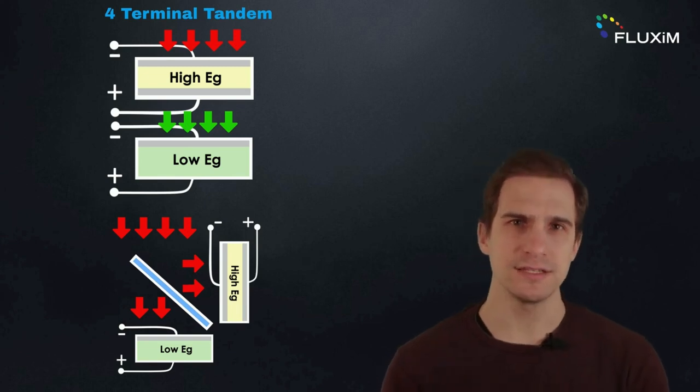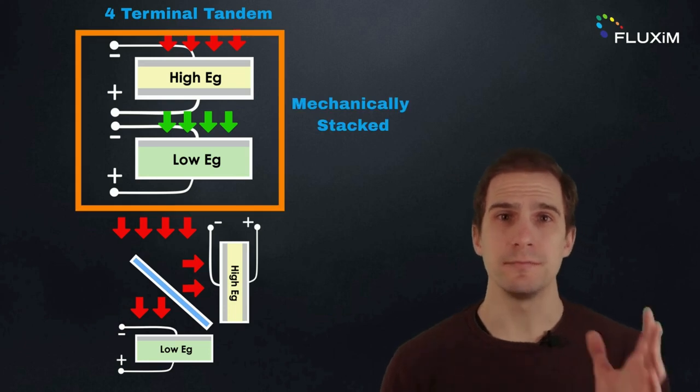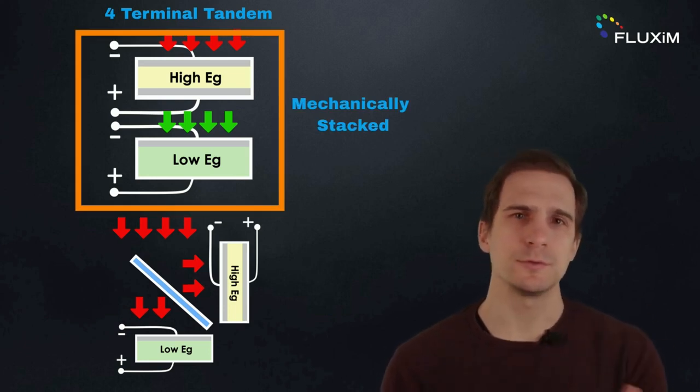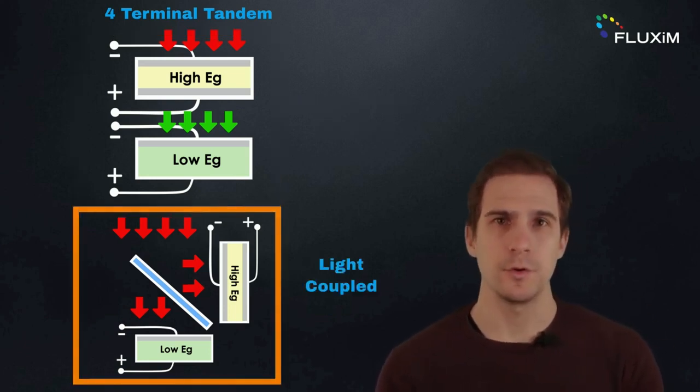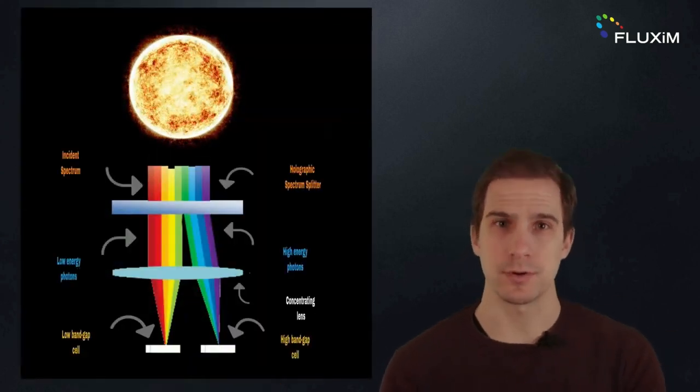The subcells are either mechanically stacked or coupled with a spectral splitter, which is essentially a set of lenses to direct light to the appropriate subcell.